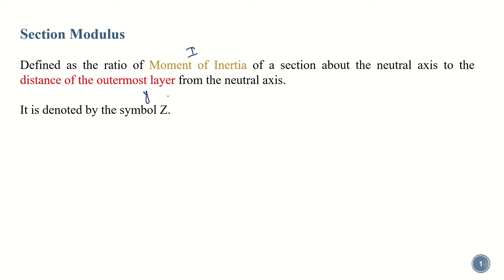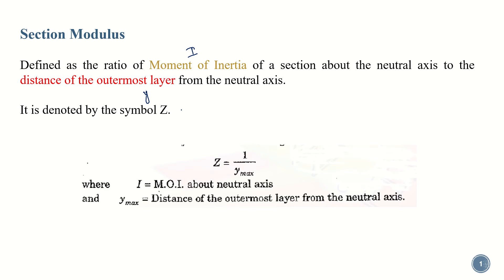The ratio of I by y is your section modulus, denoted by the symbol Z, so Z is equal to I by y_max. Here y stands for the distance from the neutral axis to any fiber or layer we select, and y_max means the maximum distance from the neutral axis — that is, the distance to the outermost fiber.